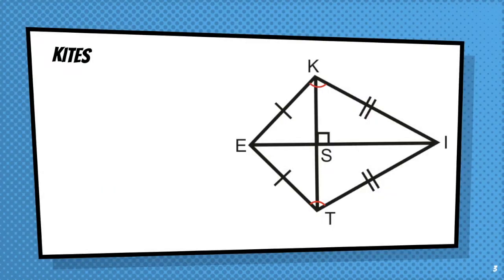First of all, kites. I encourage you to draw this diagram in your notes. Make sure that you include all of the congruence marks.